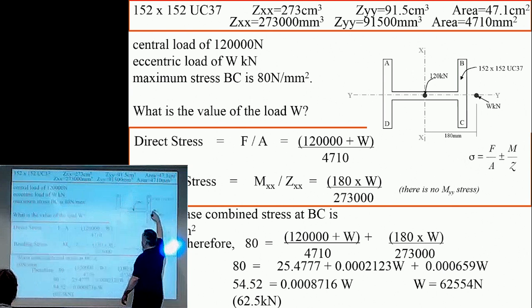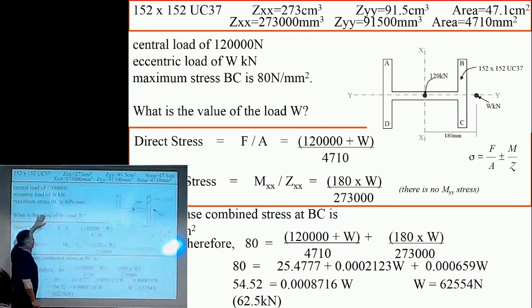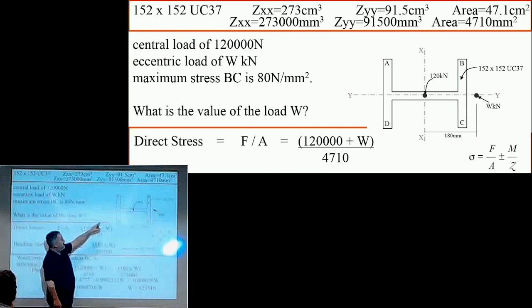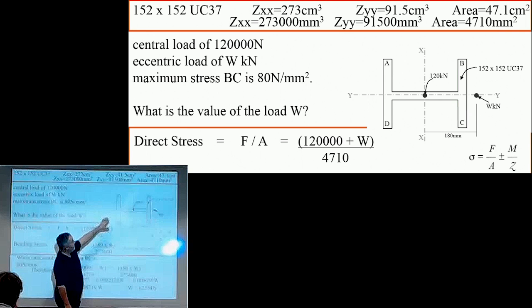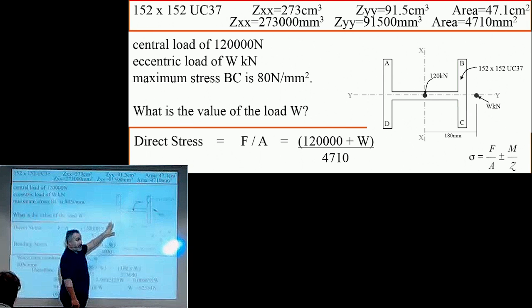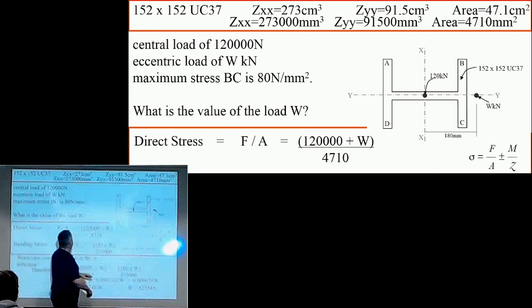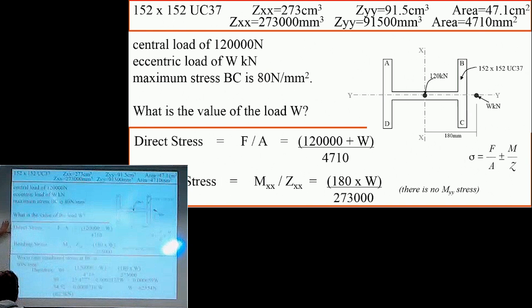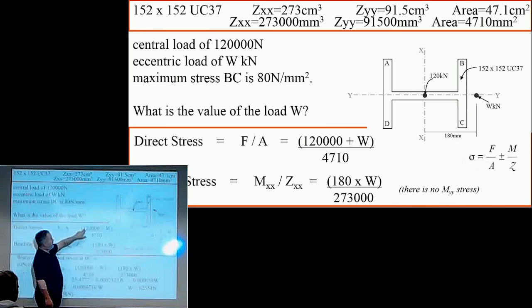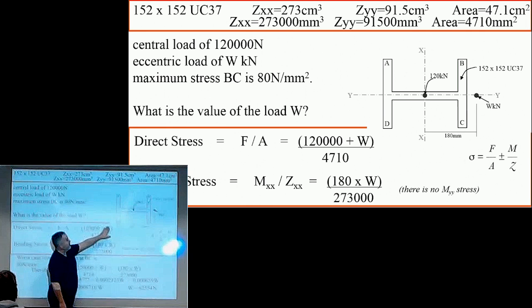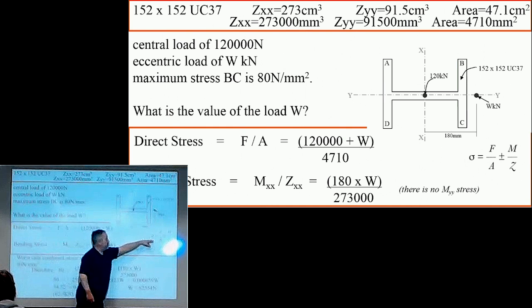And the question is, what is W? Overall, what we have to do is look at each of the forces and find out our direct stress and our bending moment stress. For our direct stress, it's 120,000 divided by our area of 4710. But there'll also be a direct stress for our W. Our direct stress is W divided by the area. So our direct stress is the middle force over the area, plus the W over the area. That's the first part of the equation.